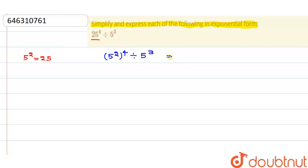Or you can write this as 5 squared to the power of 4 upon 5 to the power of 3.